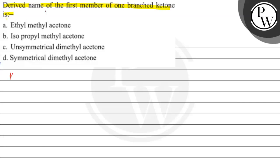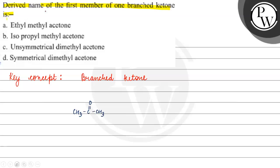The key concept for this question is branched ketone. If we have something like a ketone, how can we get a ketone? This is an unbranched ketone.